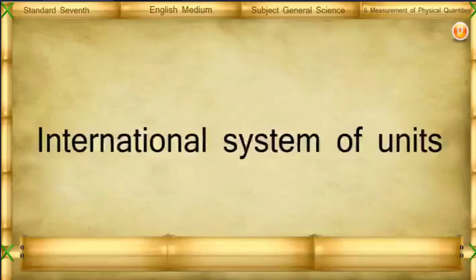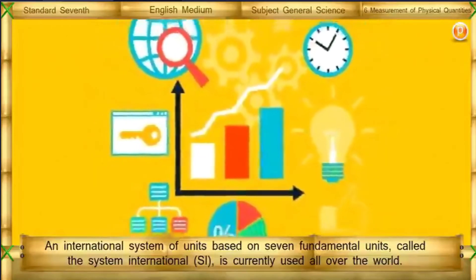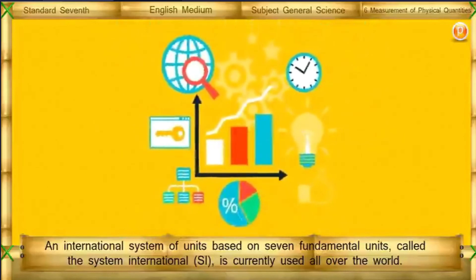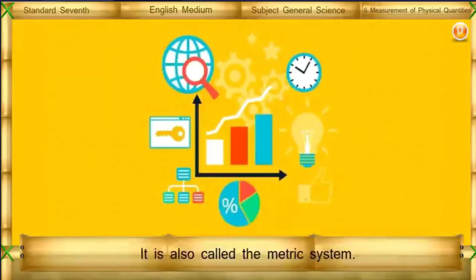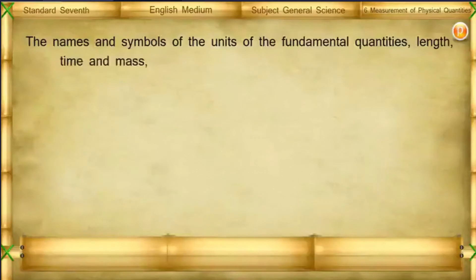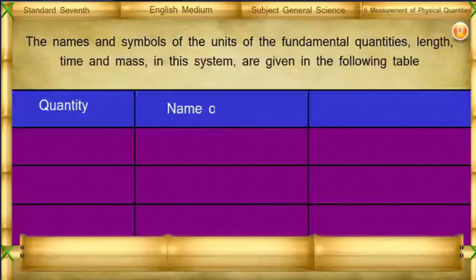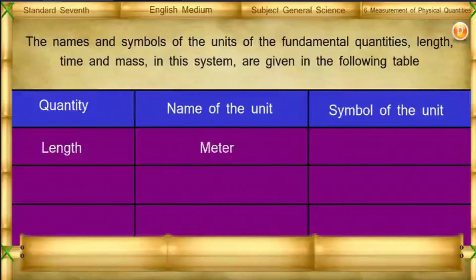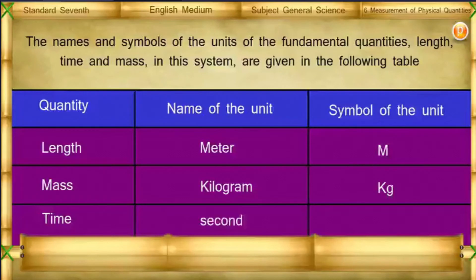International System of Units: An international system of units based on seven fundamental units, called the Système International (SI), is currently used all over the world. It is also called the metric system. The names and symbols of the units of the fundamental quantities length, time, and mass in this system are: Length — meter (m); Mass — kilogram (kg); Time — second (s).